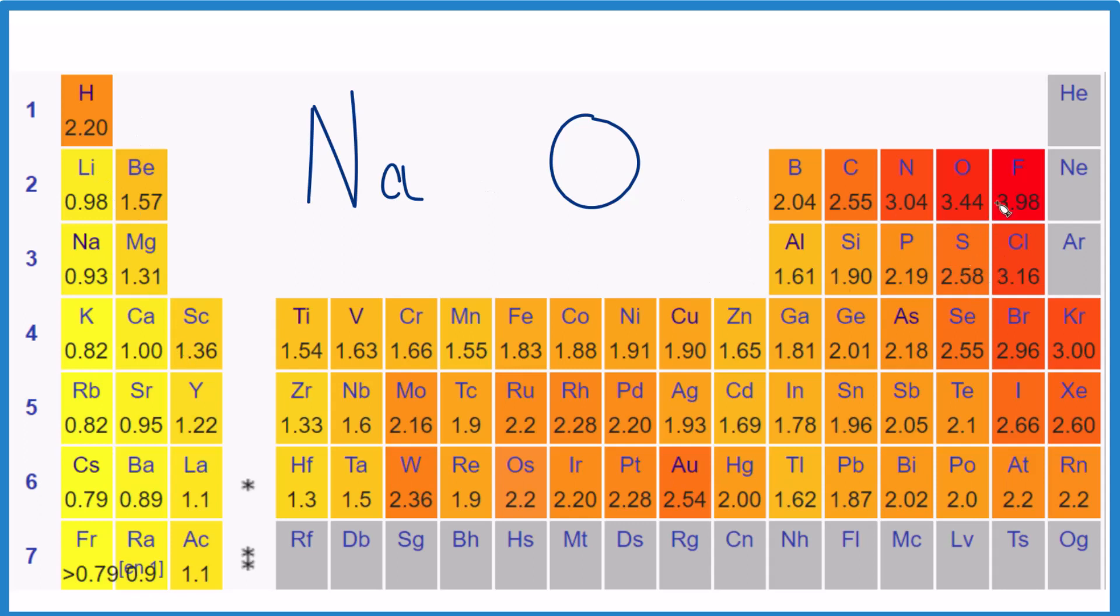Probably the easiest way to think about this is fluorine is the most electronegative. So when we go across towards fluorine here or up towards fluorine, the electronegativity values increase. If we look at oxygen right here, that's right next to fluorine. Sodium's way over here.